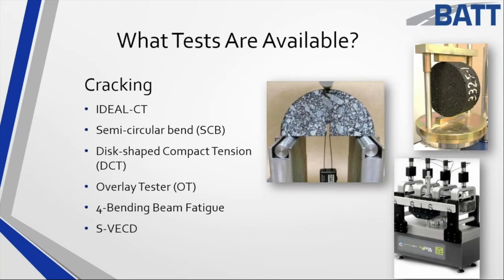The tests available today depend on where you are. In Kentucky, folks are using the Ideal CT; toward the south, if in Illinois, they're using the SCB or IFIT. The Ideal CT is in the top right of the slide, the SCB is pictured in the center. The disk-shaped compact tension test is used by the FAA or Minnesota — it does better at really cold temperatures. Overlay tests, four-point bending beam fatigue, and SVE-CD are also available. On the rutting side, the Hamburg wheel tracker is key, and the APA Junior can run both the rubber hose APA test and a steel wheel test, wet or dry.